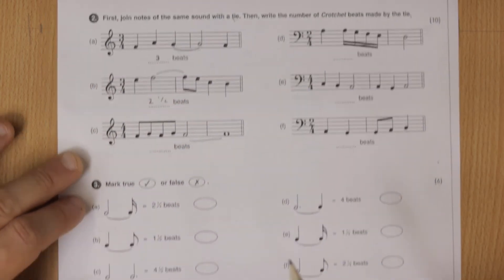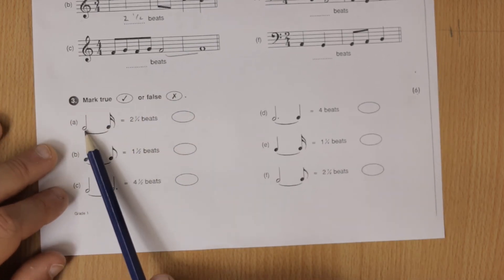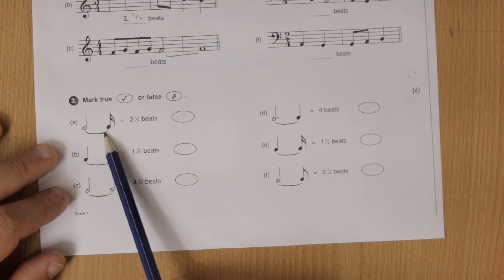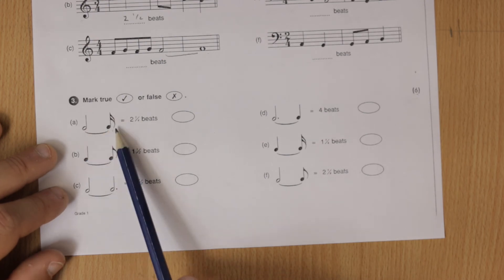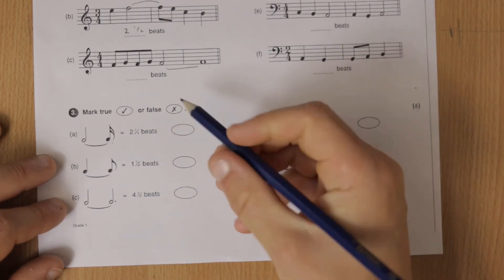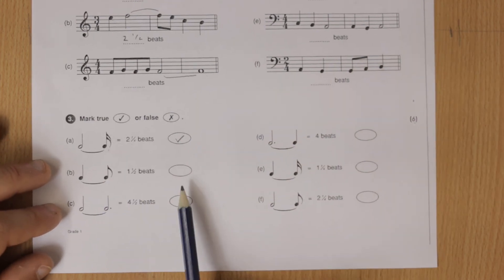Right, next question—last question—mark true or false. So this tie ties a minim to a semi-quaver, that's two plus a quarter, so does that equal two and a quarter? Of course it does so yes. All right so I'll leave you to do the rest of those, is it true or false.